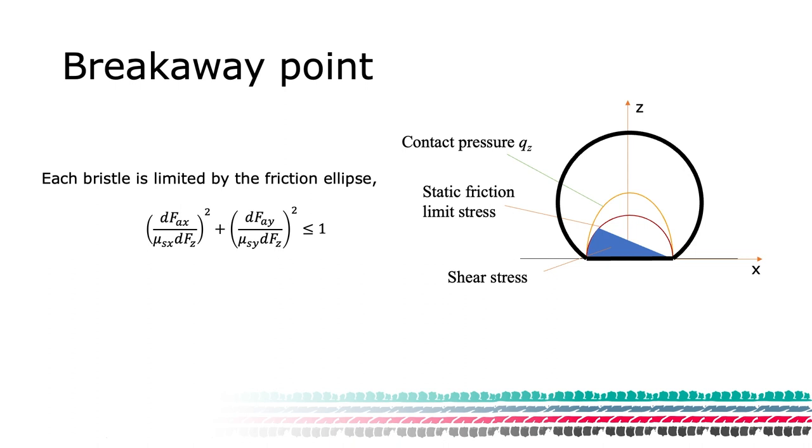If we look at one bristle in the adhesive part of the contact, we know that its force will be DFX and DFY. We have assumed that the bristle obeys Coulomb friction. This means that we can express the friction ellipse by dividing these forces with the coefficient of friction mu as X and mu as Y and the load DFZ that the bristle is experiencing.